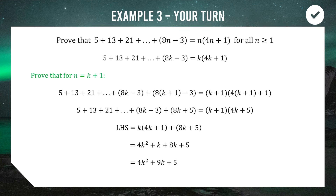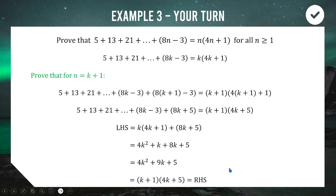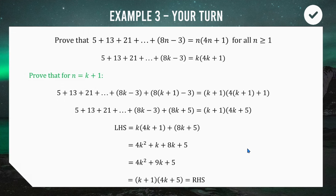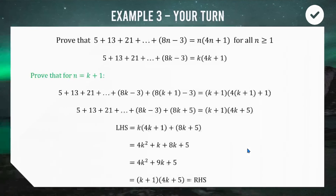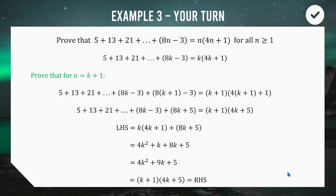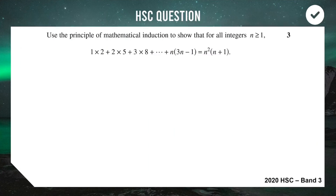Factorizing correctly, we get (k+1)(4k+5), which equals the right-hand side. Left-hand side equals right-hand side — job done. You should write therefore true by the principle of mathematical induction. Always write that concluding statement — do as I say, not as I do, and learn from my mistakes!